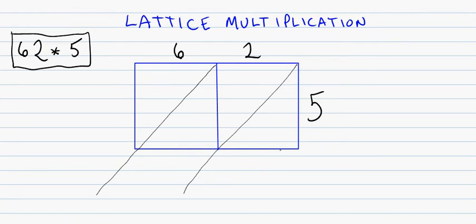My first step is going to be to multiply the 5 and the 2. And my answer gets written just like this—5 times 2 is 10, so I'm going to write 10 just like so. The next step is going to be to multiply the 5 and the 6. 5 times 6 is 30, so we put it right there.